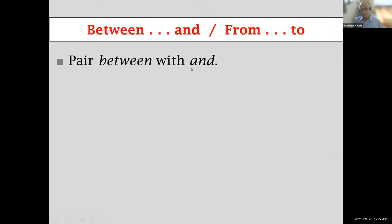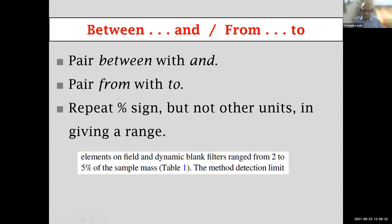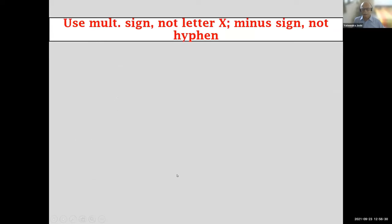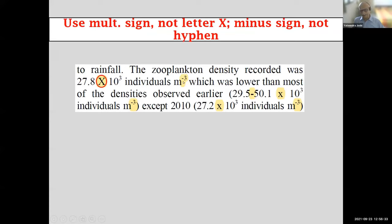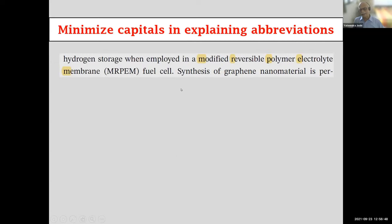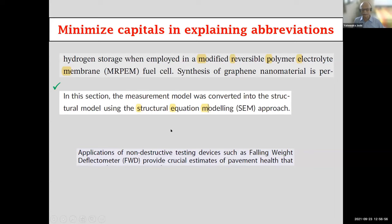'Between' is always followed by 'and'; 'from' is always followed by 'to' — you cannot mix them. If expressing a range of percentages, repeat the percent sign: '2% to 5%.' Use a proper multiplication sign, not the letter X, and a proper minus sign, not a hyphen. When explaining an abbreviation, the spelled-out words should remain in lowercase — for example, falling weight deflectometer, where 'falling,' 'weight,' and 'deflectometer' should not be capitalized in the expansion.